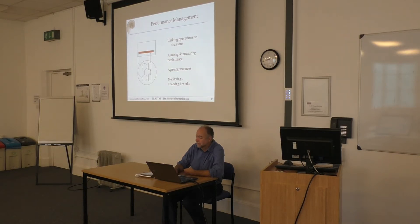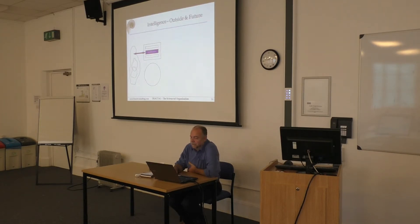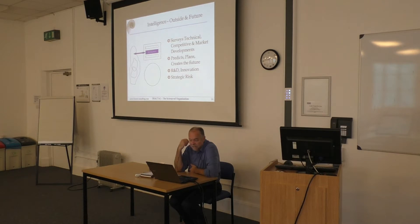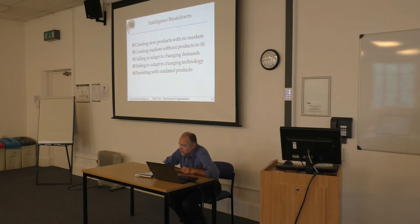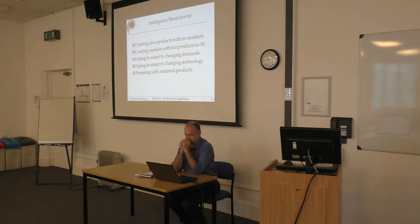If you get into designing governance systems, you see almost all the rules of this broken on a regular basis, with the inevitable opening for crisis to happen as a result. Then we've got another part of management — drawn in blue — which is about looking outside and into the future: surveying technical, competitive, and market developments; predicting; planning; R&D; innovation; and strategic risk. This is one of the really common absences in organisations. Where that fails, you get a mismatch between what the organisation does and what it needs to be doing — outdated products, attitudes to business, or processes.